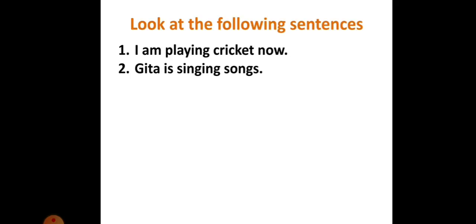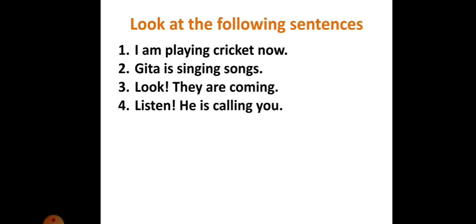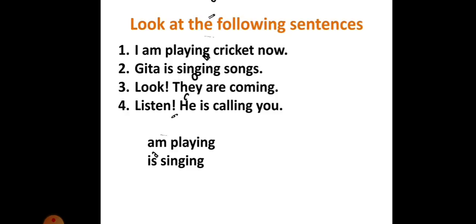In this session let's try to learn a few more new patterns and understand their usage. Look at the following sentences: I am playing cricket now. Geeta is singing songs. Look, they are coming. Listen, he is calling you. These sentences are made with a subject plus am, is, or are and an -ing form. These are all verbal phrases combining B-forms with -ing form: am, is, are plus -ing form.